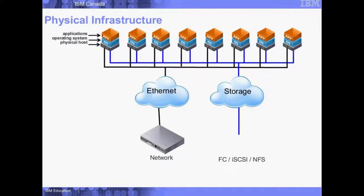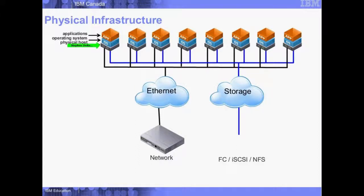This slide shows us the old way of doing things. We have our physical infrastructure — back in the old days, you'd have physical servers. An enterprise customer might have thousands of these: DNS servers, mail servers, web servers, database servers. Each server has an operating system installed on top — maybe Windows, Linux, or Novell — and then each server typically has an application installed on top of that.